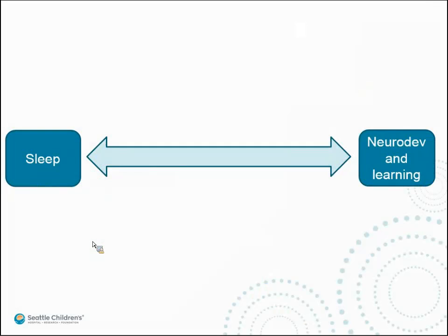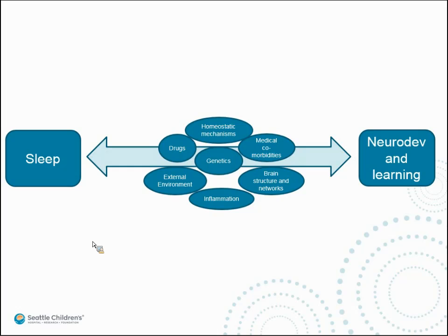Now I'll talk about sleep and childhood development — a topic that itself could be ten lectures. There are definitely direct correlations between sleep and neurodevelopment, but we must look at not just those two things as a whole, but their parts. The mechanisms shared between sleep and neurodevelopment include genetics, drugs children are taking, external environments, brain structure and networks — both pathologic and normal — medical comorbidities, homeostatic mechanisms, imbalances, and inflammation.